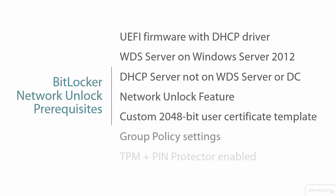In addition, you'll have to have those group policy settings configured that we took a look at just a second ago — those are the group policy settings that enable the use of Network Unlock. And lastly and most importantly for our environment, in order to use this, you have to have TPM chips on all the machines that are participating. In our VMware Workstation environment, we don't have any TPM chips — they are simply not virtualizable with VMware Workstation. You will have to have the TPM plus PIN protector enabled on all participating machines.